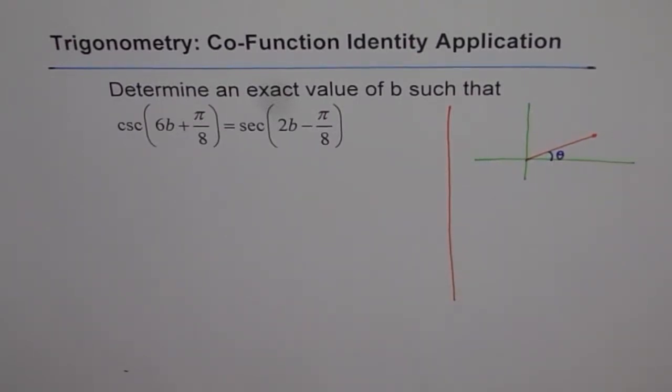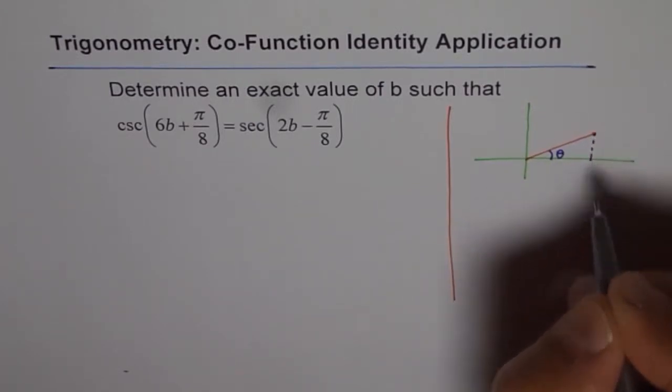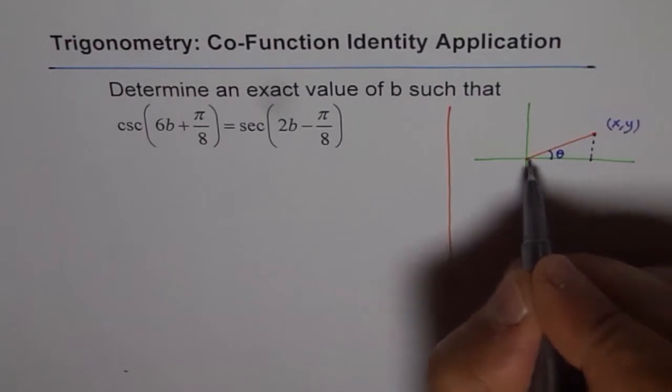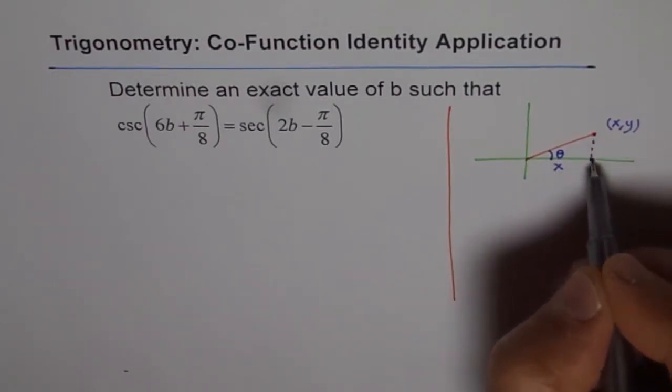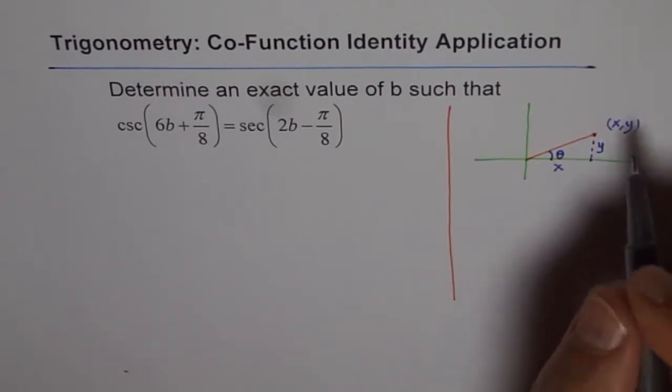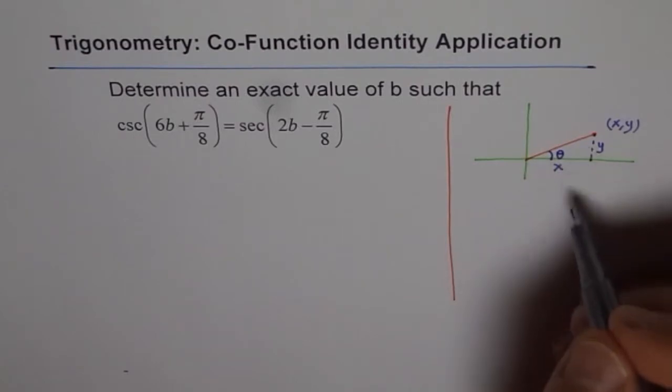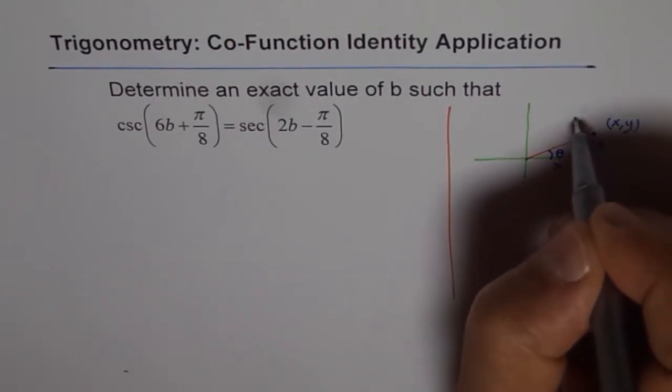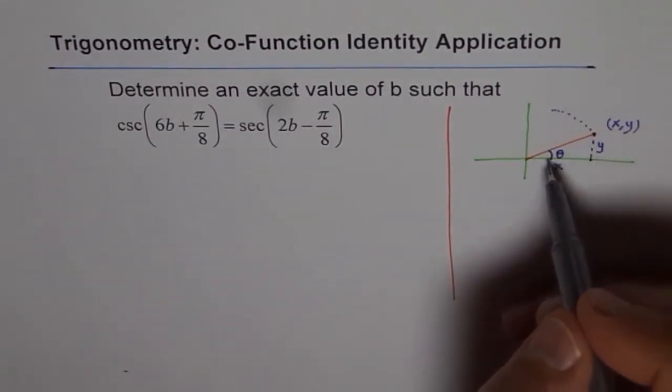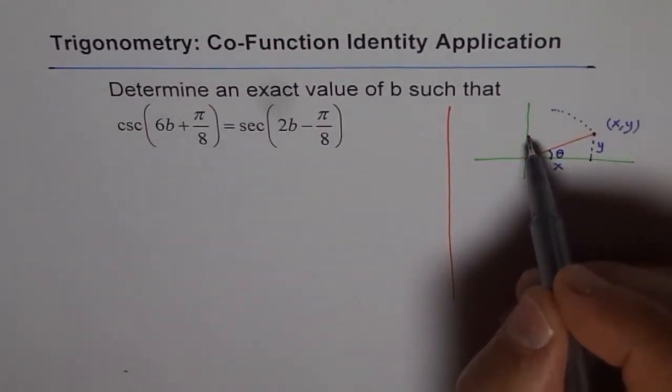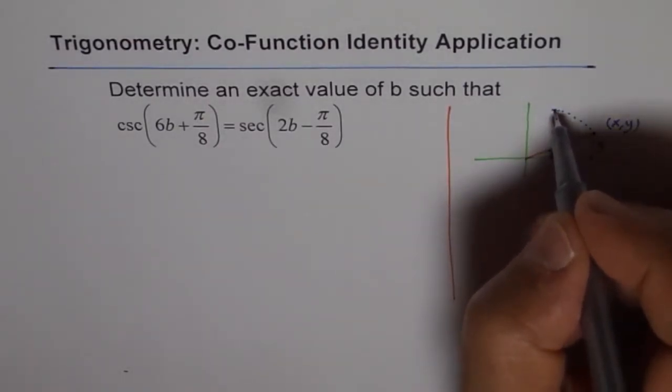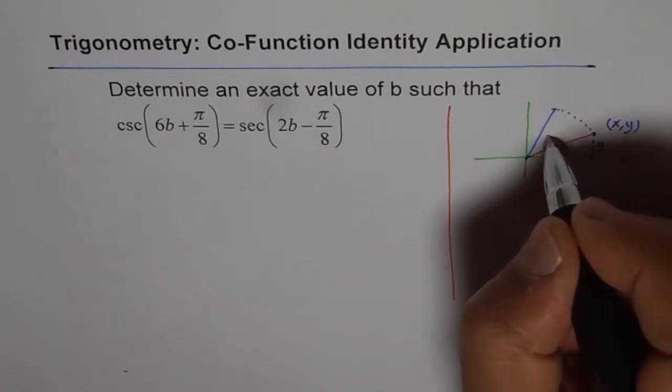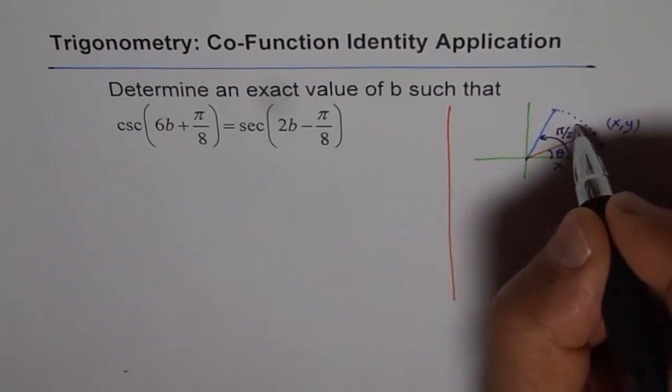If I drop a perpendicular from here, and if this point is general point x and y, then from origin to this point, the adjacent side will be x and the opposite side will be y. That forms this basic acute angle triangle. Let us consider moving this terminal arm counterclockwise so that we reach a point where the angle is π by 2 minus theta.